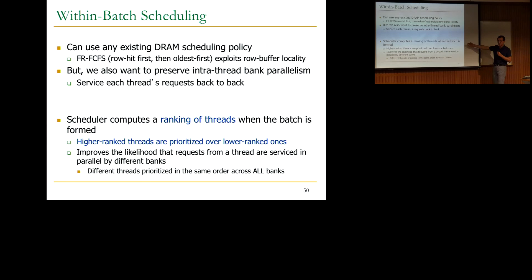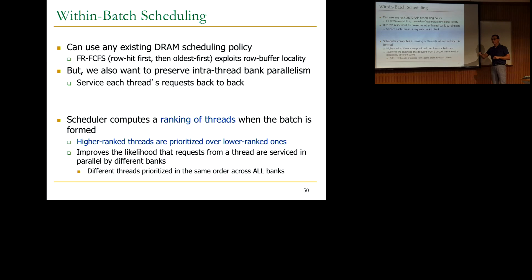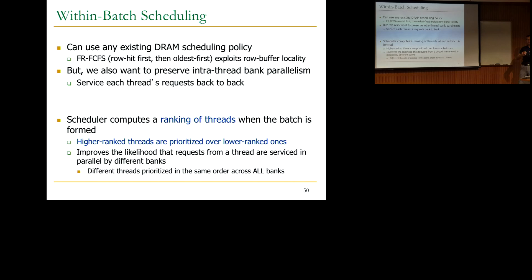If you do this, you improve the likelihood that requests from a thread are serviced in parallel by different banks, because all banks obey the same rank order — they all try to prioritize the same thread at a given time. You could also extend this ranking to multiple memory controllers, and we have some other work that covers that later, though it makes things more complicated. The key question now is: how do you do this ranking?